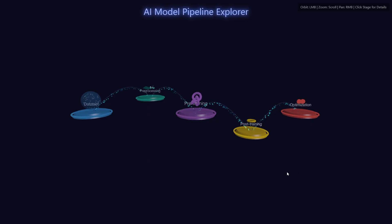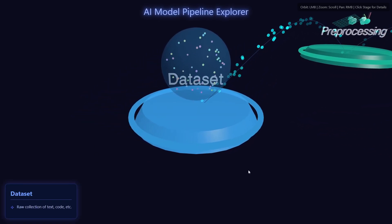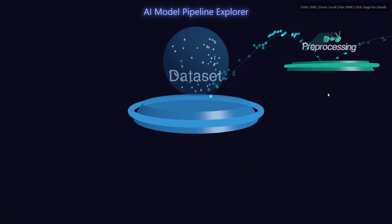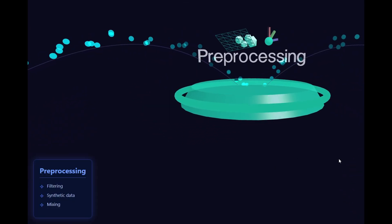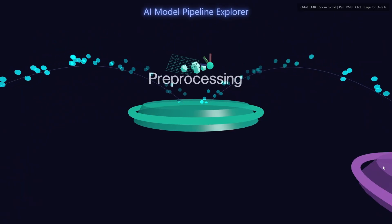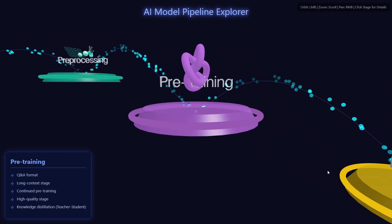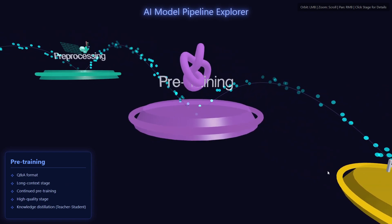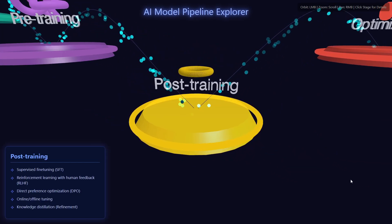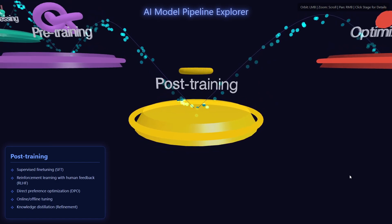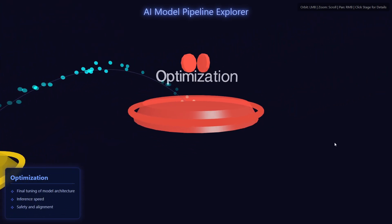Let's look at the model pipeline I created using HTML, CSS, and JavaScript. The dataset is merely a raw collection of text and code — we don't have much knowledge about this stage. Then they talk about pre-processing: filtering, synthetic data mixing, etc. The pipeline covers pre-training stages including Q&A format, long context, continued pre-training, high-quality stage, and knowledge distillation. Post-training includes supervised fine-tuning, reinforcement learning with human feedback, direct preference optimization, online and offline tuning, and knowledge distillation.